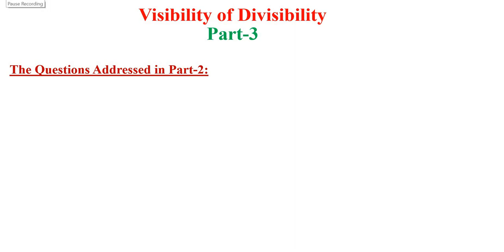Hello and welcome back to my channel. Today, we are with the third part of our ongoing series on visibility of divisibility. In the last video, part 2, we have addressed some questions like, does the strategy 1 that we have presented in the first part of the series give test 4 for p equal to 7?